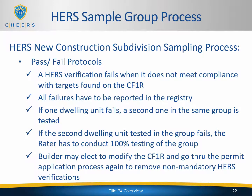To summarize the failure rules: a HERS verification fails when it does not meet compliance with targets found in the CF1R. All failures must be reported in the registry. If one house fails, the second house in the same group is tested. If that second house also fails, the rater must conduct 100% testing in the group. The builder may also elect to modify the CF1R and go through the permit application process to remove non-mandatory HERS verifications — but even if they do, it's still a failure that must be recorded.